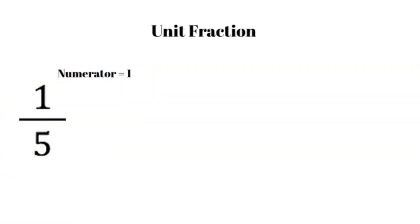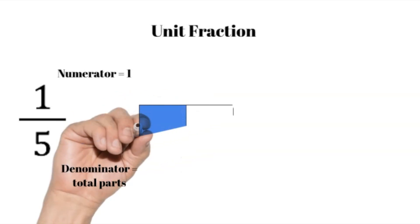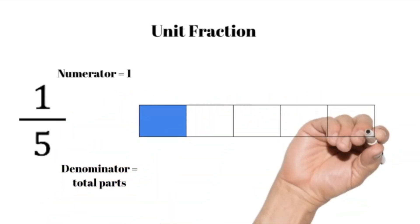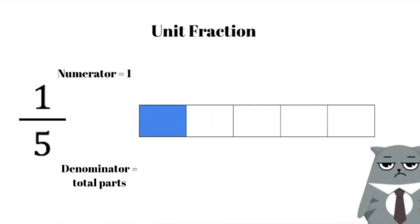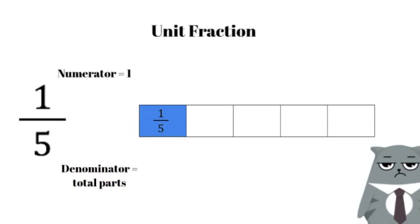In this video, we will be looking at specific types of fractions called unit fractions. The numerator in a unit fraction is always one, and the denominator is the total number of equal parts. In this model, the shaded piece is one unit fraction.